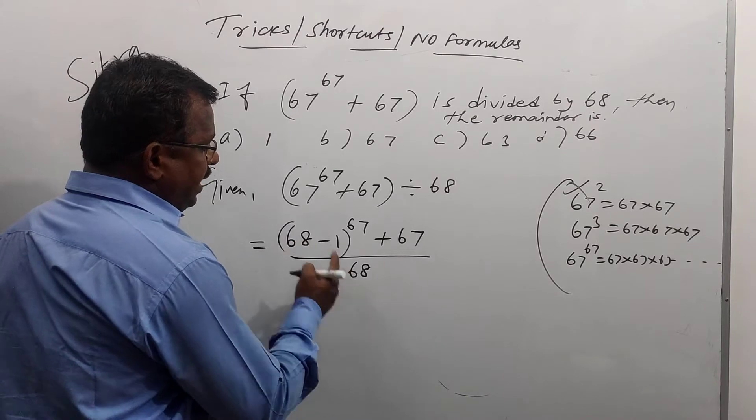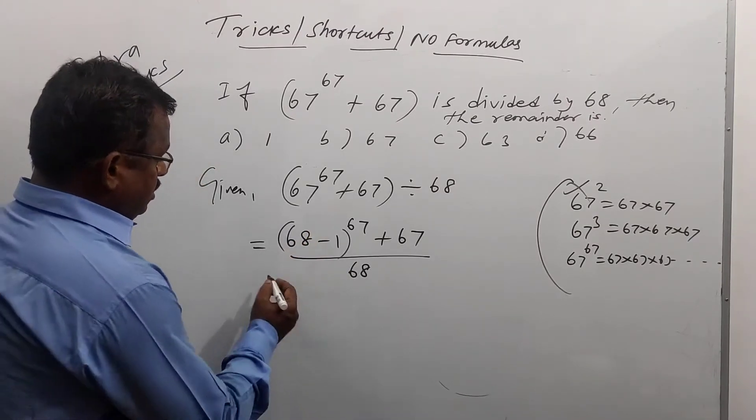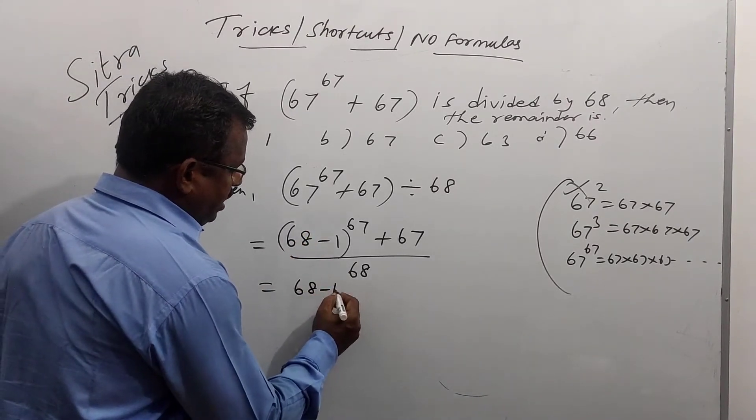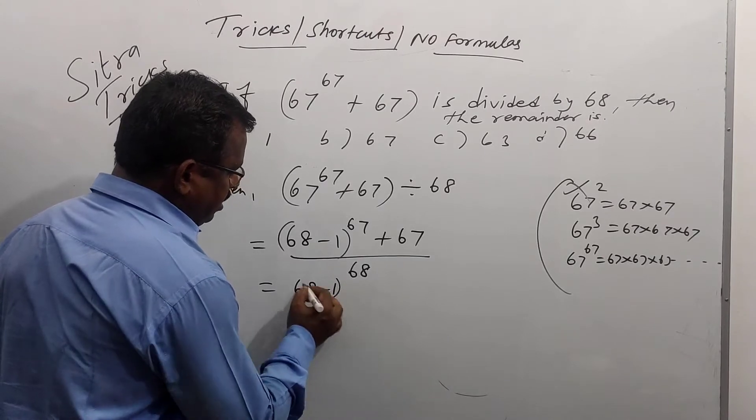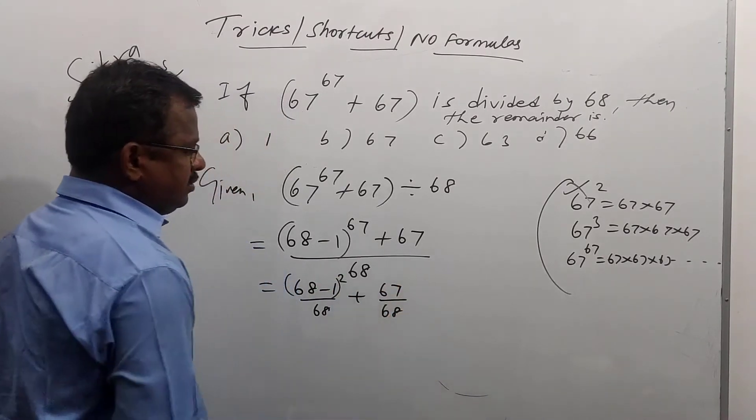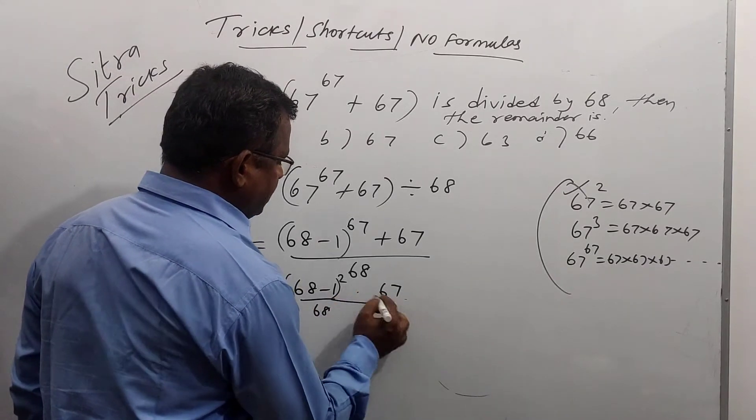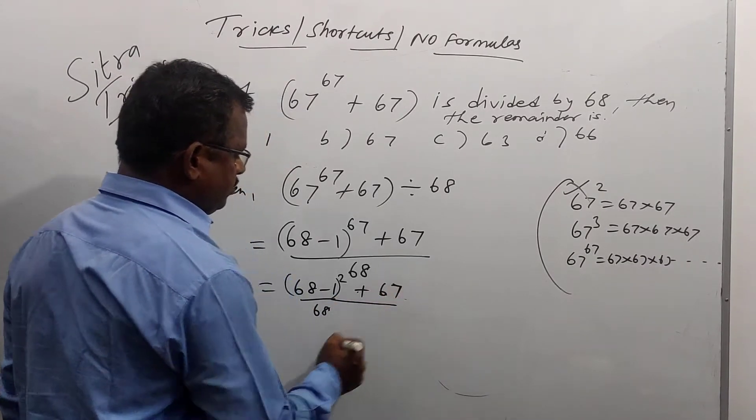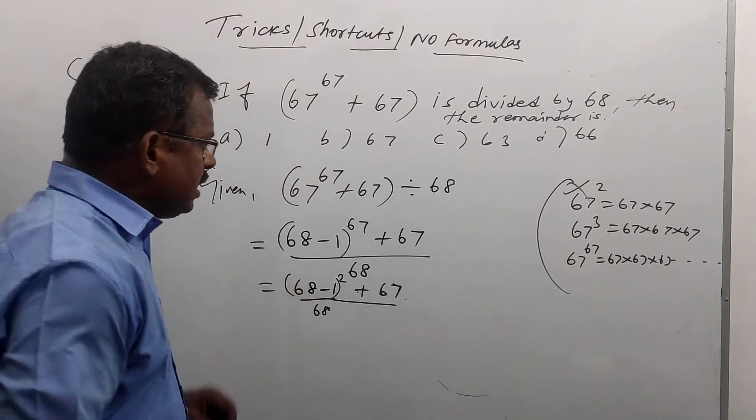Whole power 67 plus 67 divided by 68. 68 by 68. Here 68 minus 1 by 68, the whole square. Plus 67 by 68. Otherwise simply, you can write plus 67.